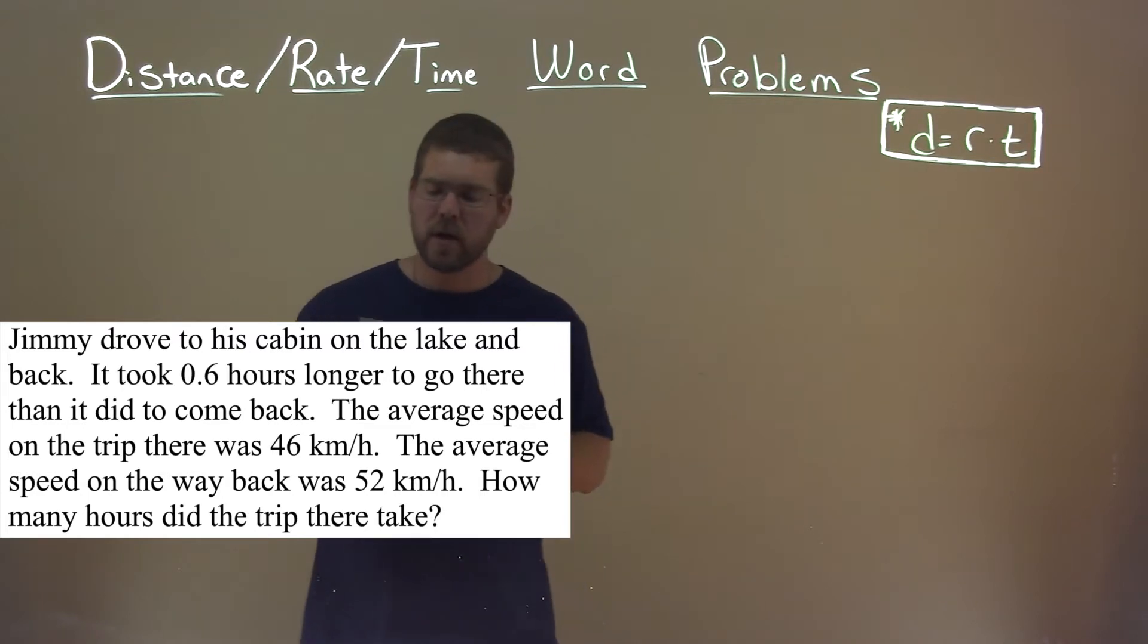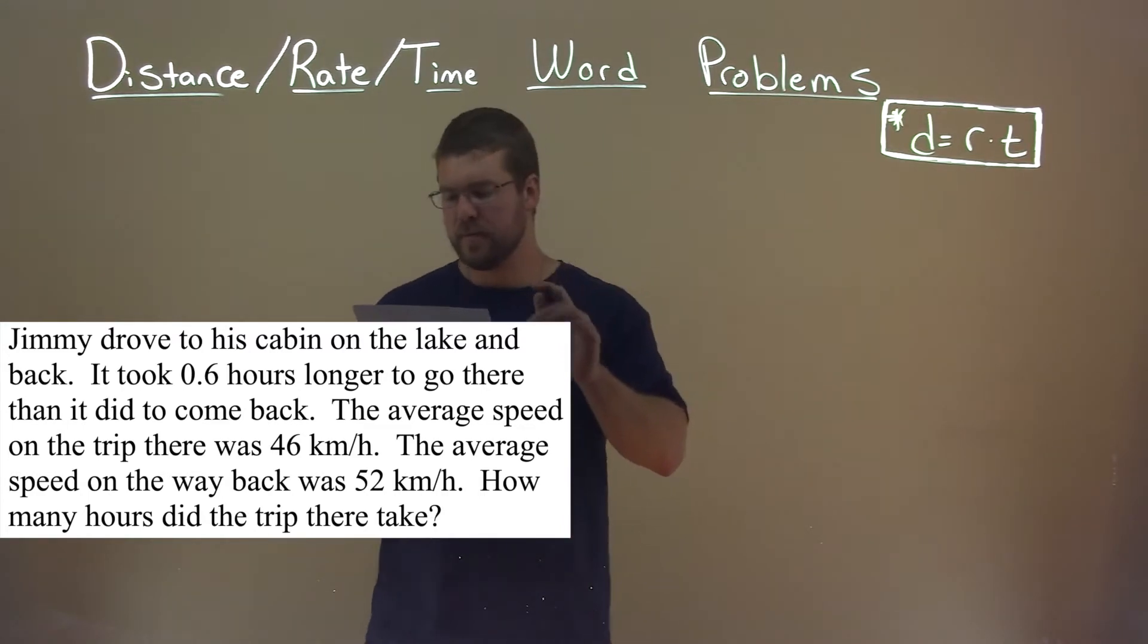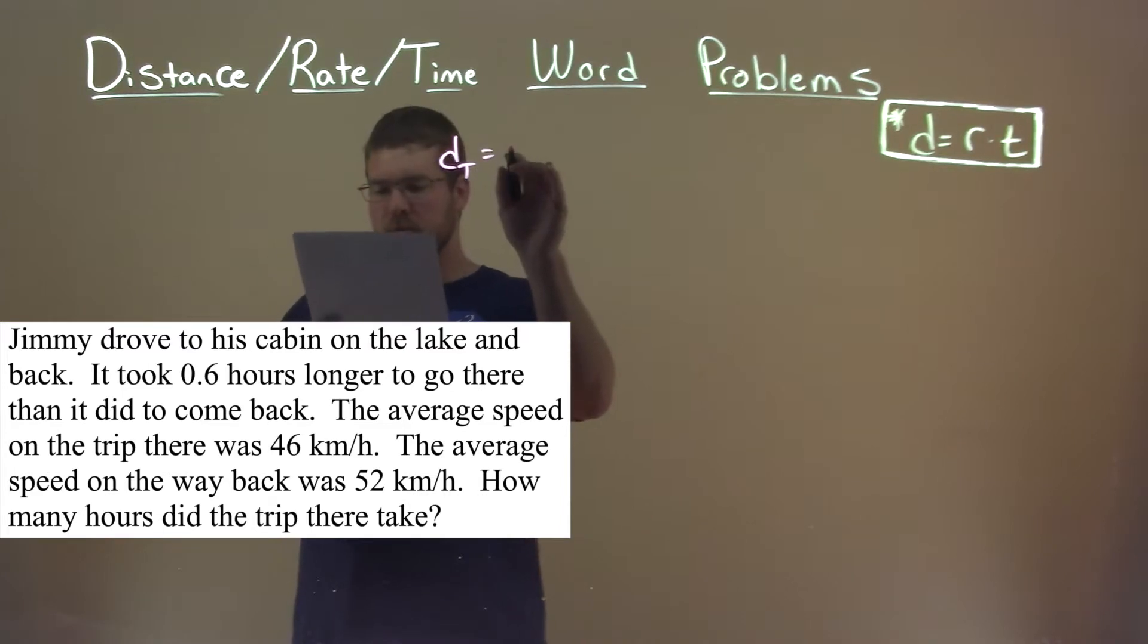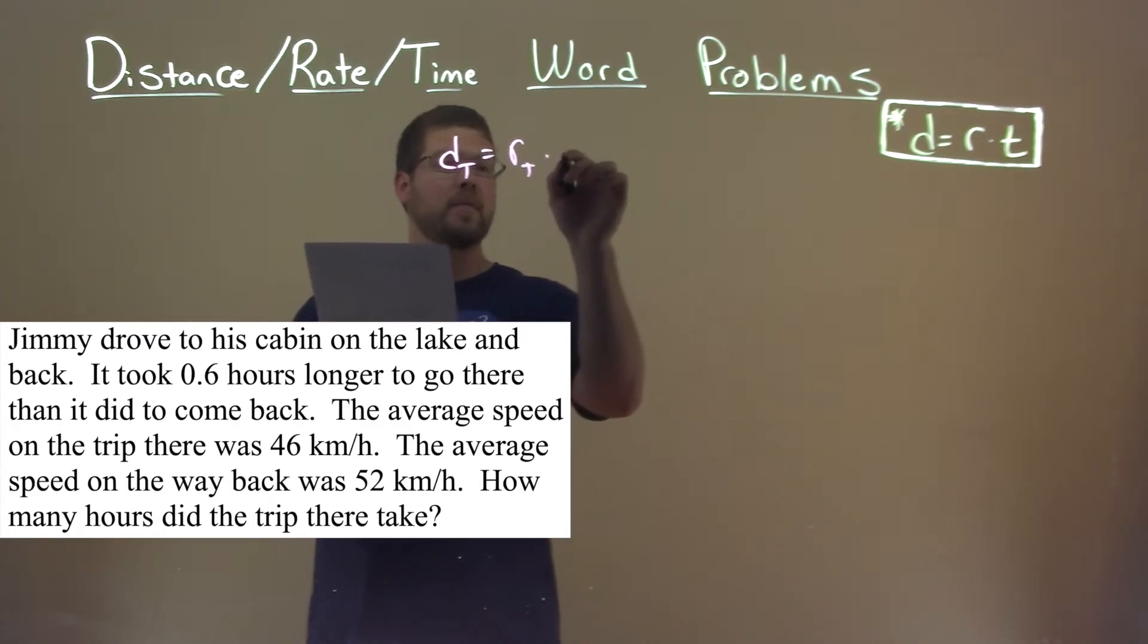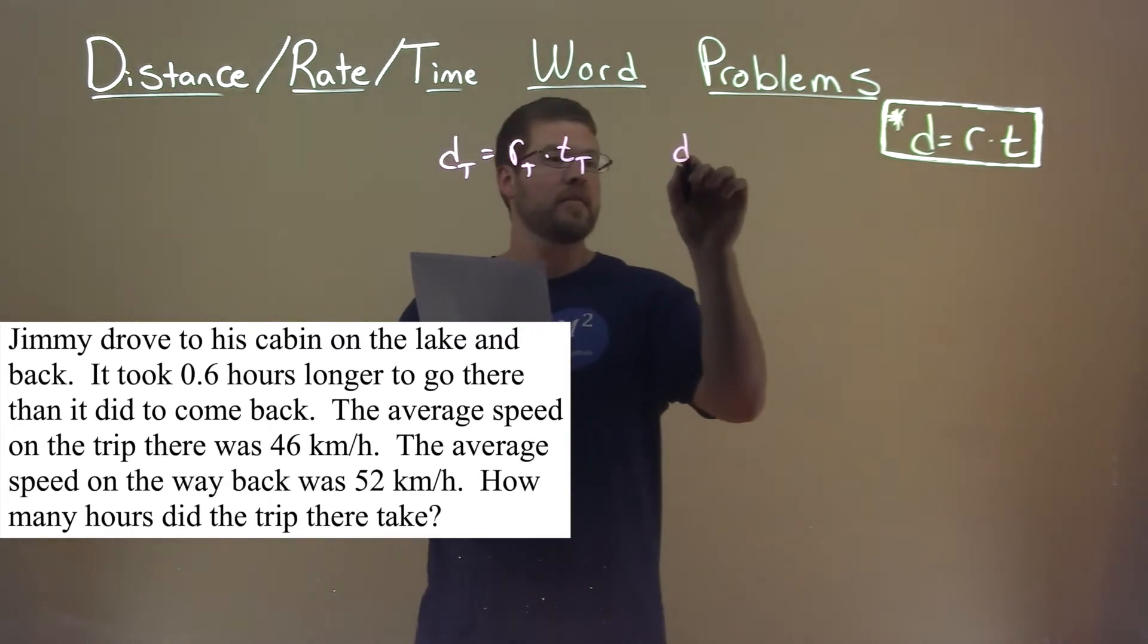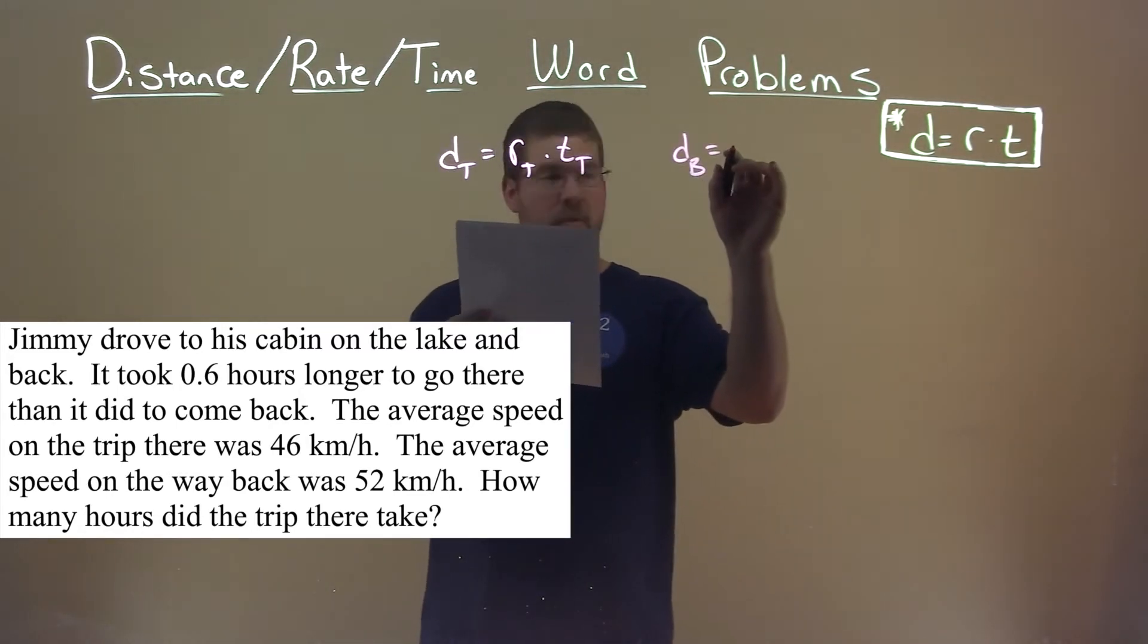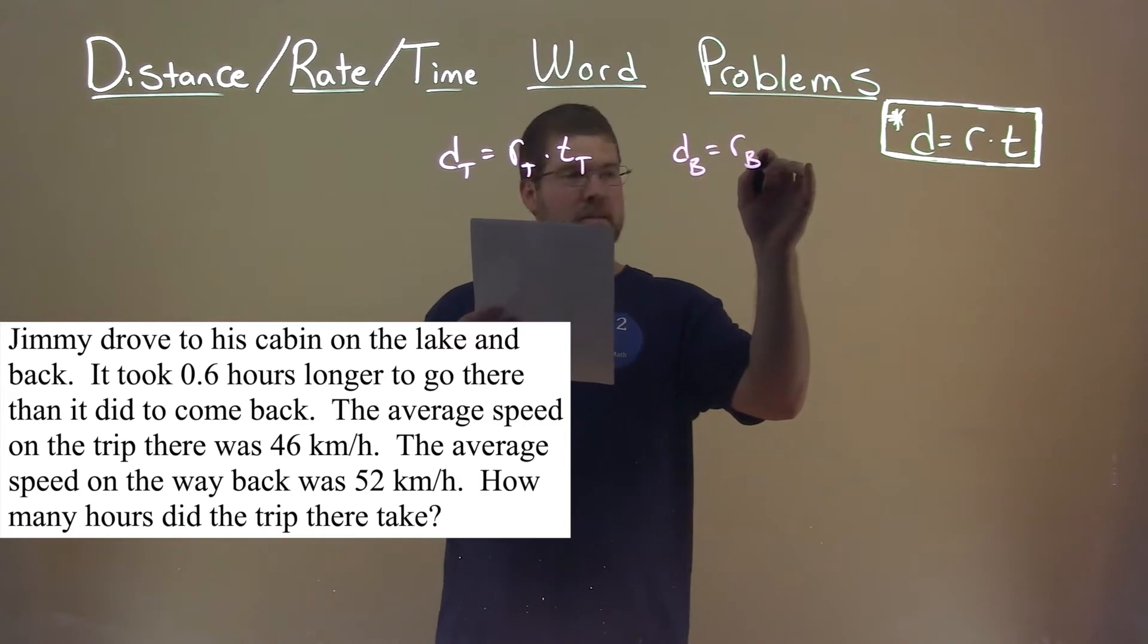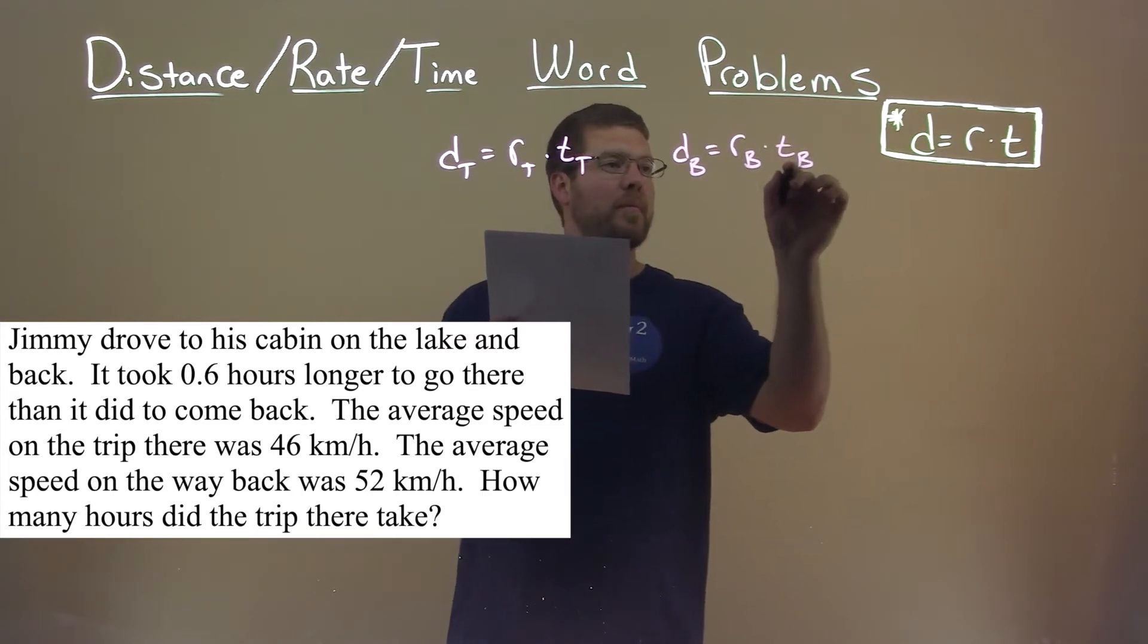So let's break it down to two equations. Distance there is equal to the rate there times the time there. The distance back is equal to the rate back times the time back.